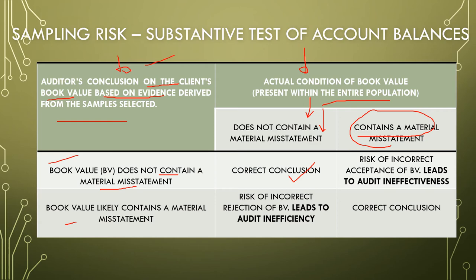The second conclusion is that we have concluded the book value is likely to contain a material misstatement. But in actual fact it does not contain a material misstatement. Therefore, there is a risk of incorrect rejection of book value, which leads to audit inefficiency. Under the second state, we have correctly concluded. So similarly, one outcome is about ineffectiveness and the other is about inefficiency.